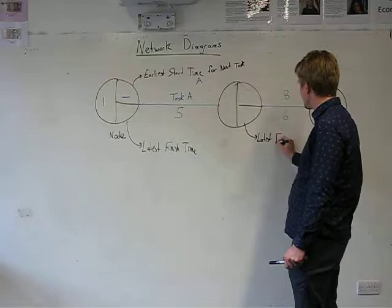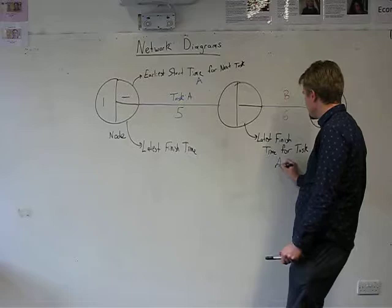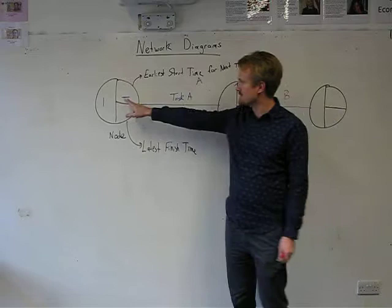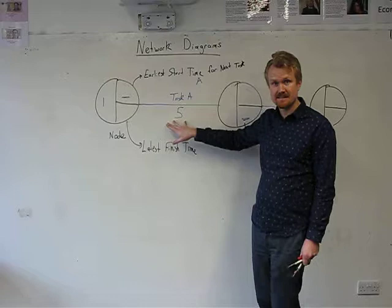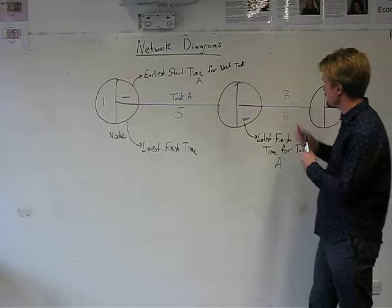So the latest finish time for task A is going to be in this one here. So the key things to know about for task A is that its earliest start time would be in this node, the node preceding it. The duration is listed in the task. And the latest finish time for the preceding task, which is to say task A, would be here. So therefore the earliest start time for task B would be here.